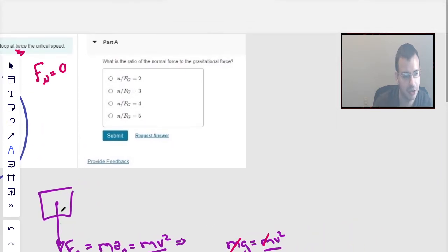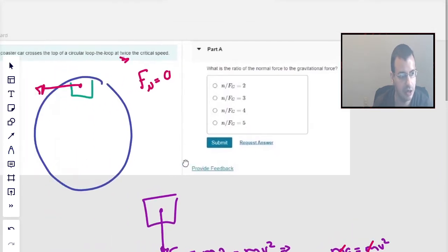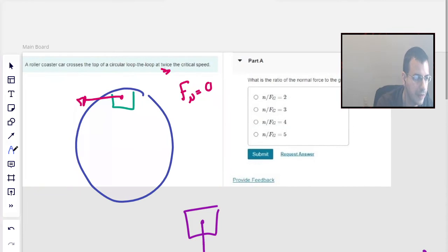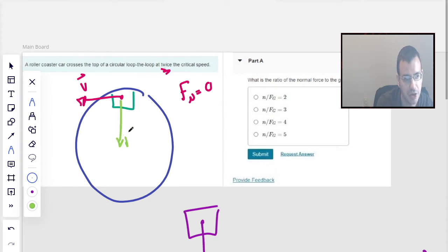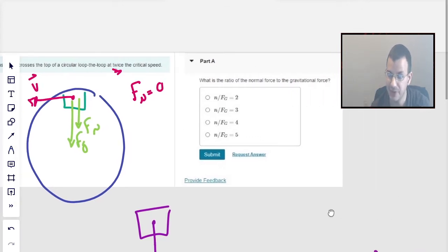Now we're going to redraw this picture. We have the same picture with the direction of motion. We're going to have force-gravity going down, and now we're also going to have a force-normal going down, because the first time we did critical speed with no normal force, but now it's a little bit faster.